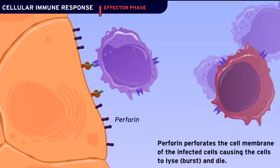The binding causes the cytotoxic T cells to release a potent chemical called perforin. Perforin perforates the cell membrane of the infected cells, causing the cells to lyse, burst, and die.